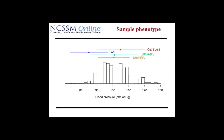Why did we breed those mice? In this particular case we're interested in blood pressure. If you look at this histogram, we're showing blood pressure of mice ranging from 80 millimeters of mercury to about 130 millimeters of mercury. If a mouse has a blood pressure of 80 mmHg, they have low blood pressure — they're hypotensive. If they have 130 mmHg, they have high blood pressure — they're hypertensive. The AJ mice, represented in blue, tend to have really low blood pressure, so if we only study that strain, they're all going to have low blood pressure.